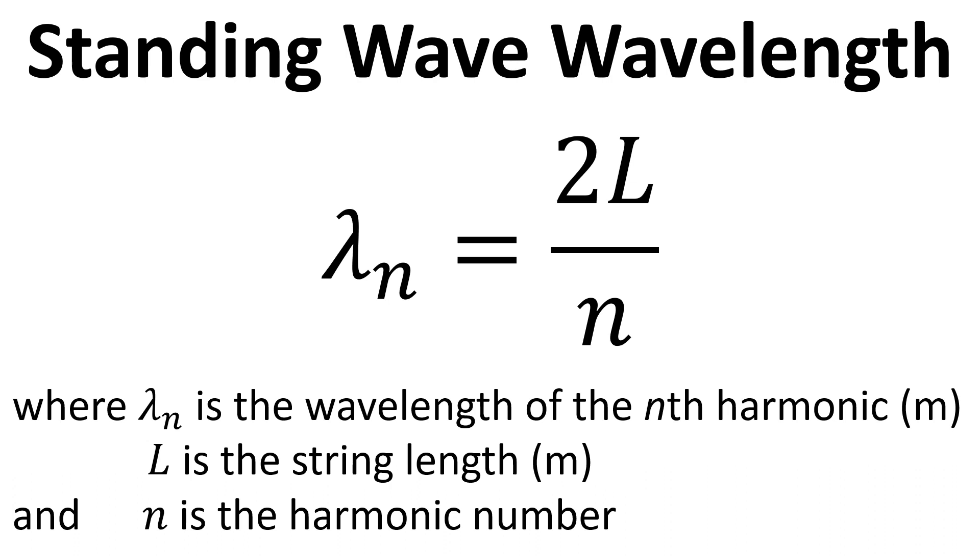To calculate the wavelength of a standing wave we can use this equation here. We have lambda subscript n equals 2L over n. Lambda subscript n is the wavelength of the nth harmonic. L is the length of the string and n is the harmonic number. By knowing two bits of the information we can calculate the third bit of the information and we may need to rearrange the equation to do that.